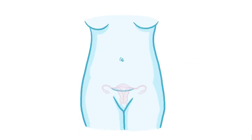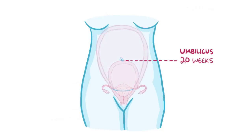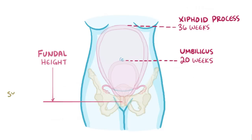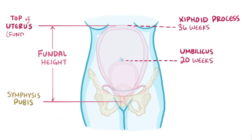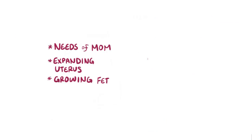Many of the changes in pregnancy are directly related to the growth of the uterus. The uterus is normally a pelvic organ, but during pregnancy it grows into the abdomen, rising to the level of the umbilicus by twenty weeks gestation and to the xiphoid process by thirty-six weeks. The fundal height — the distance from the symphysis pubis to the top of the uterus, the fundus — is a good estimate of gestational age. For example, at thirty-six weeks you might expect it to be about thirty-six centimeters, but at twenty weeks it'd be closer to twenty centimeters.